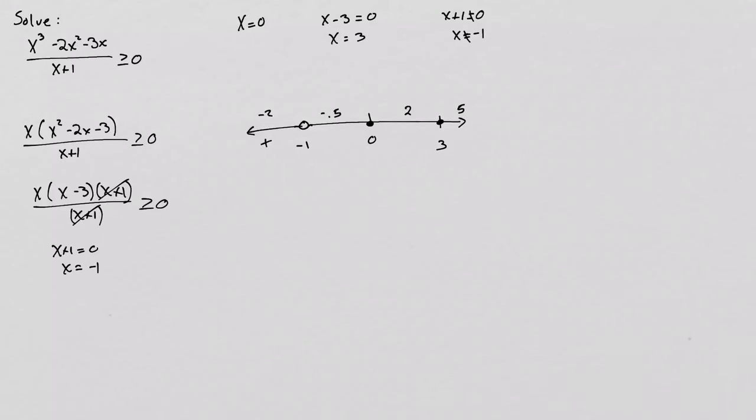Well, over here when I plug negative 2 in, I get a positive number. When I put negative 0.5 in, I also get a positive number. At 2, I get a negative number. And then at 5, I get a positive number.